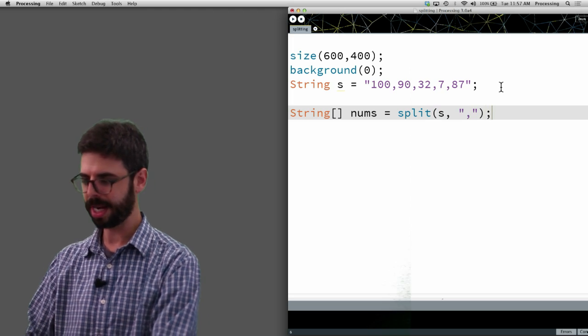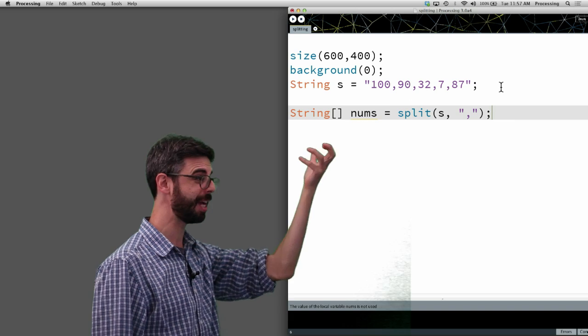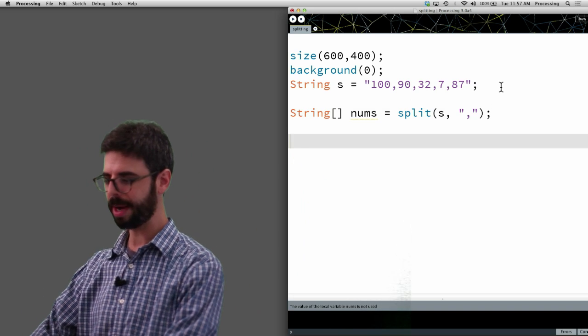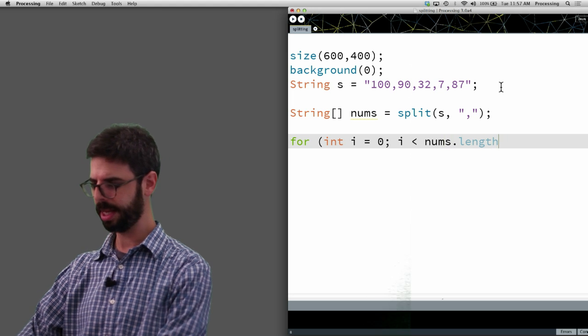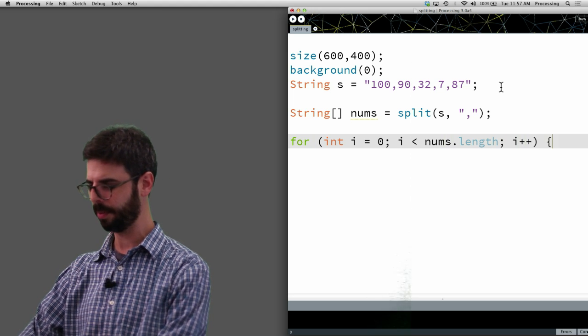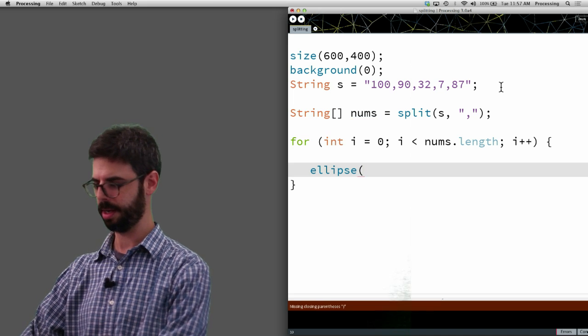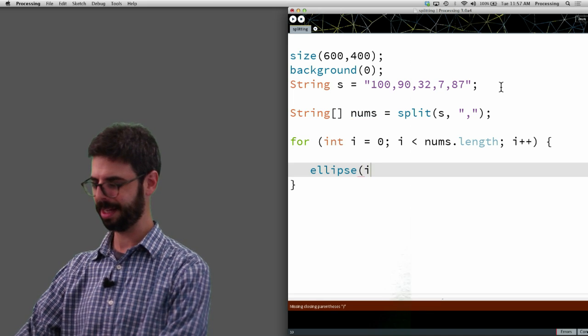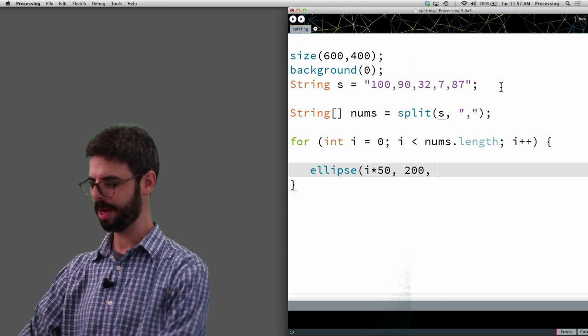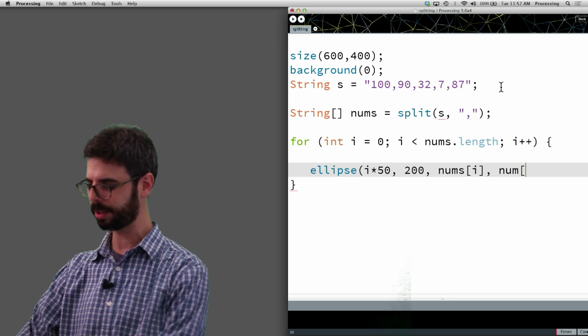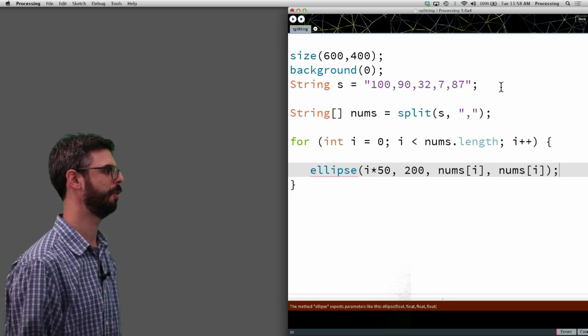Split s and comma is my delimiter, so now I should have all of these values in an array of strings. And we might say, I'm going to loop through that array and the length of the array, and the index will go up by one, and then I'm going to draw an ellipse at i times 20 or 50, and then at some y value, and then the size of each one of these circles is the data that's in my original string.